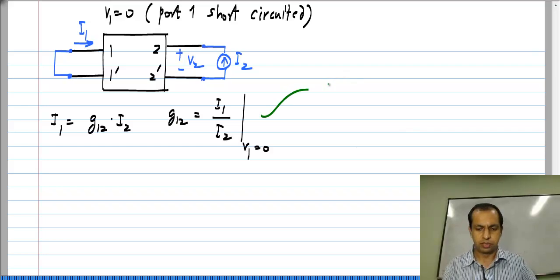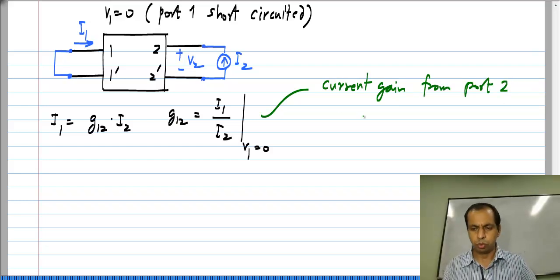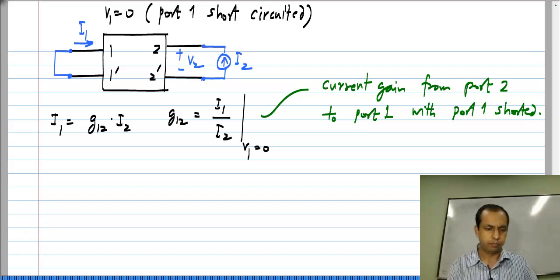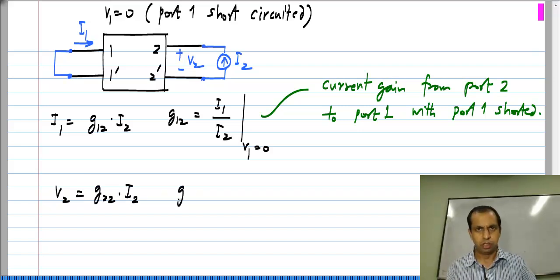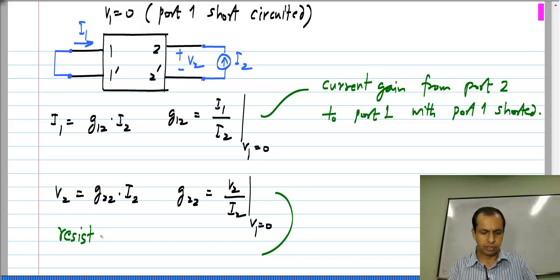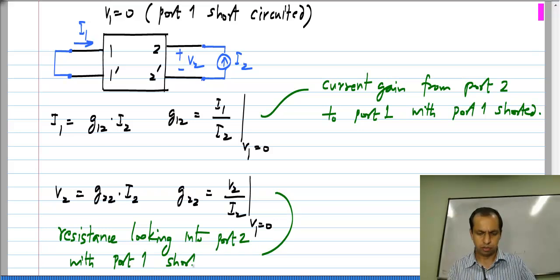In other words, it is the current gain from port 2 to port 1 short circuited. And V2 is G22 times I2, or G22 is V2 by I2 with V1 equal to 0, which is nothing but the resistance looking into port 2 with port 1 short circuited. So, that is what G22 is.